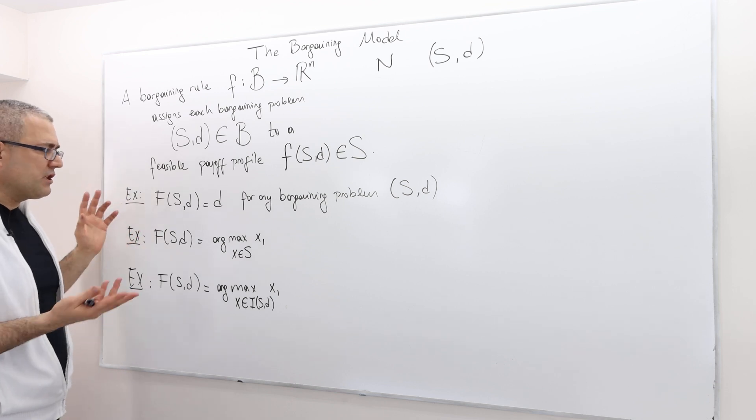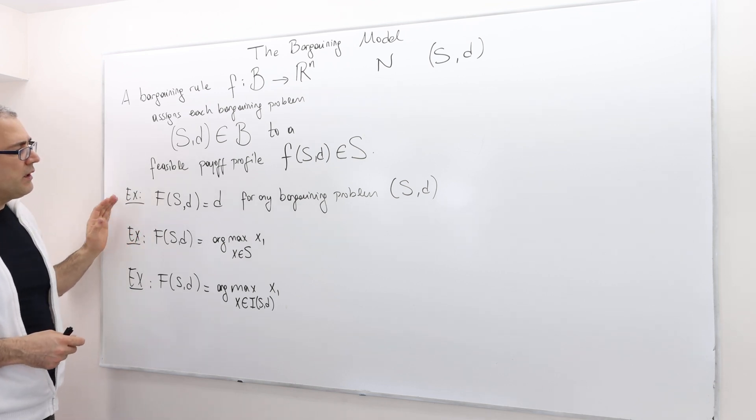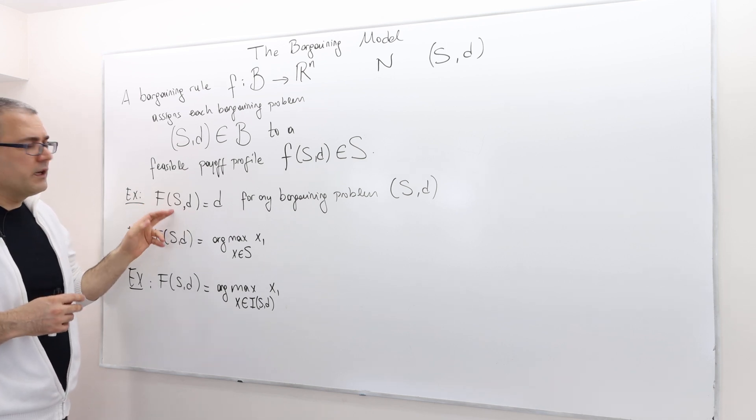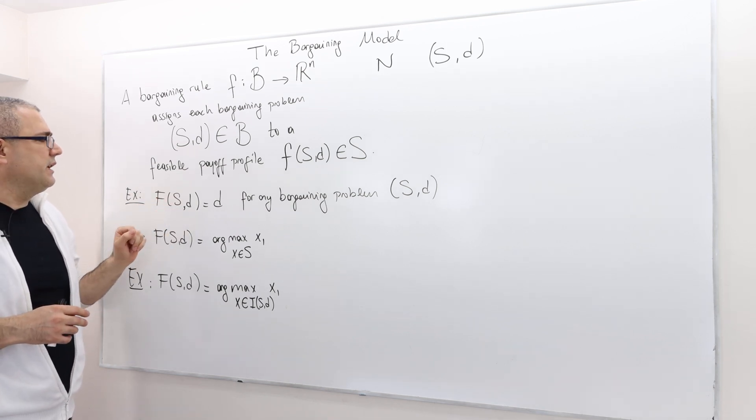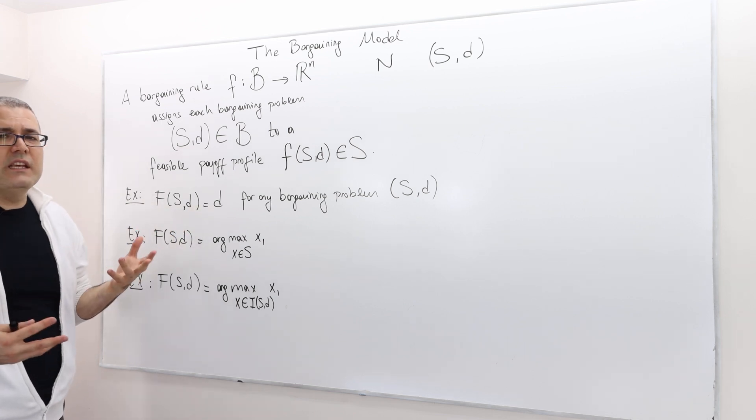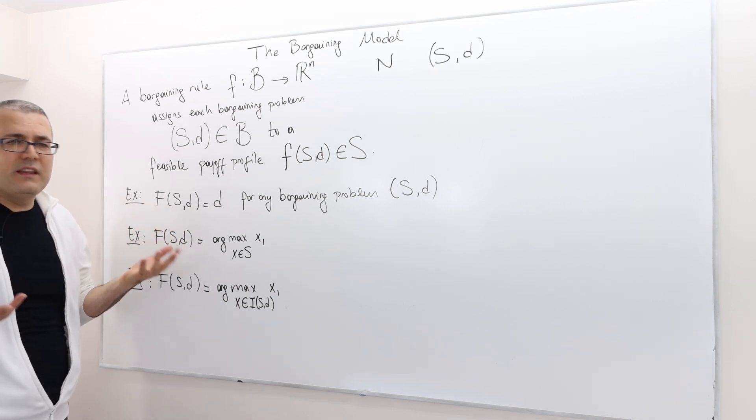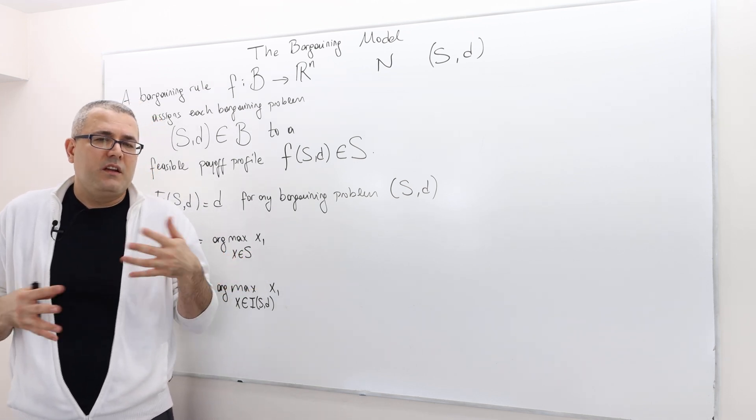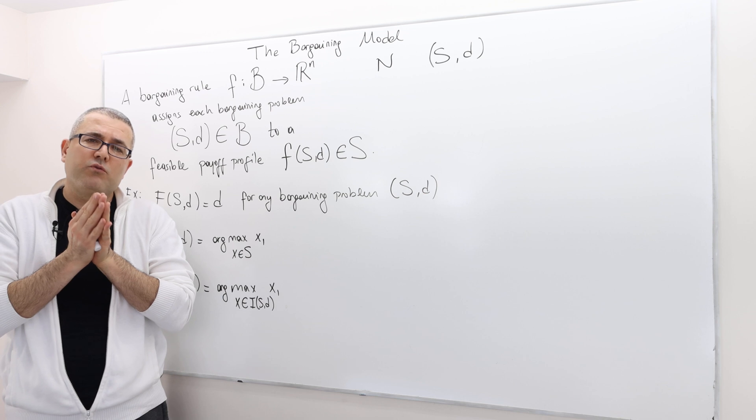They don't have any specific name. I just made them up. So the first one basically says the following. Given your bargaining problem, S and d, your solution is d.